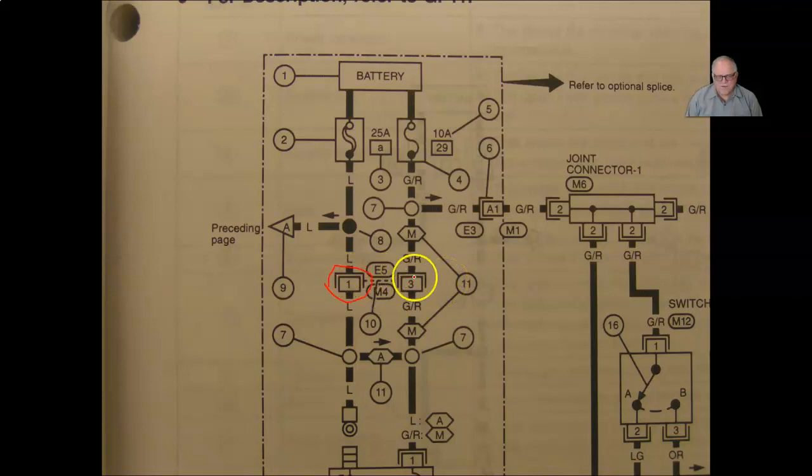But on Nissan, the female is E5, the male is M4. And what that would tell you is this is the fifth connector of the engine wiring harness, the E5. This is the fourth connector of the main wiring harness. This is going to be where the main wiring harness plugs into the engine wiring harness.